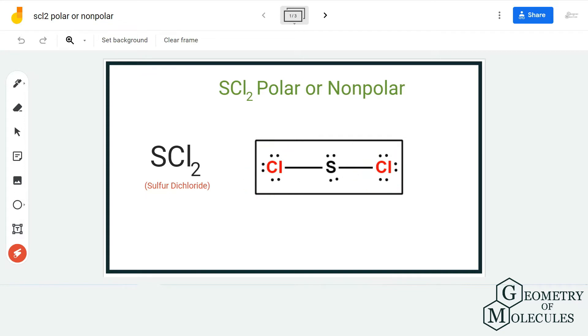This molecule might seem linear at first glance because of the arrangement of atoms and the electron pairs. But let's not forget about the two lone pairs of electrons that are present on the central atom.